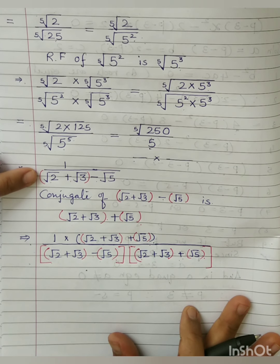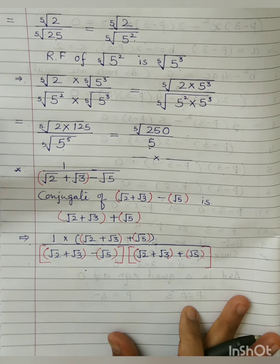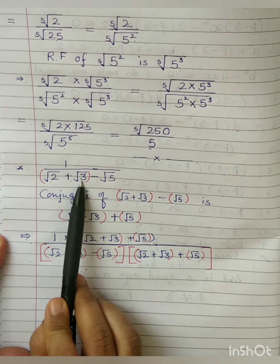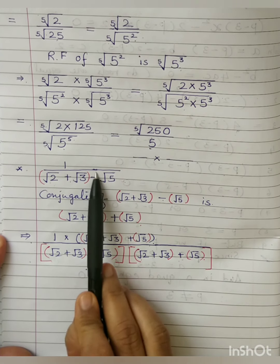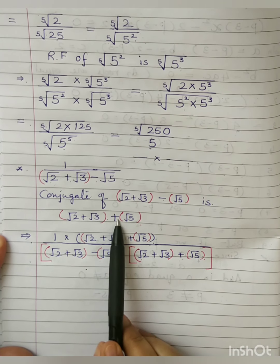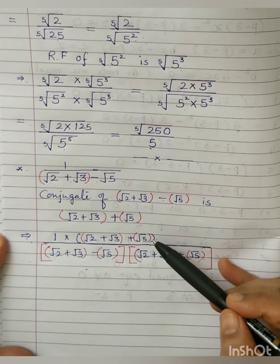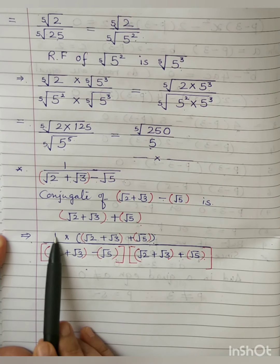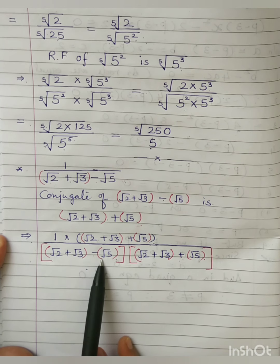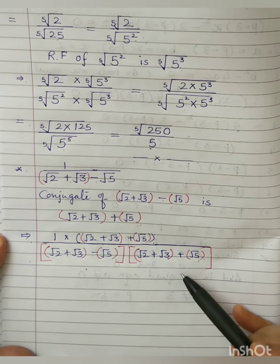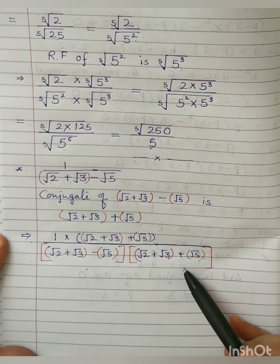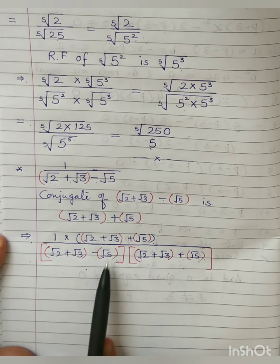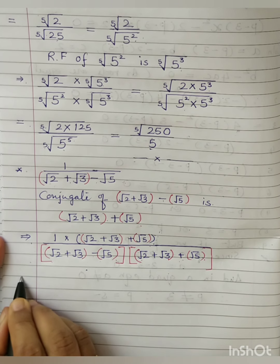Since three terms were there, we expressed them as two terms by combining any two, then treated them as a binomial. The conjugate differs only in the sign. So to summarize: the original fraction 1 upon (root 2 plus root 3 minus root 5) is being multiplied and divided by (root 2 plus root 3 plus root 5), being the conjugate of the denominator. In the denominator we now have the pattern (a minus b) multiplied by (a plus b), which gives a squared minus b squared.